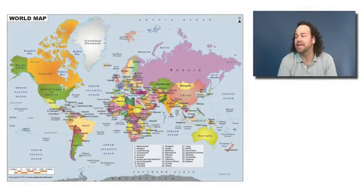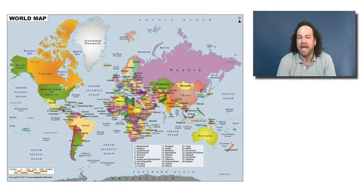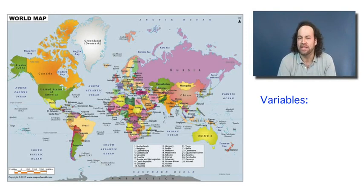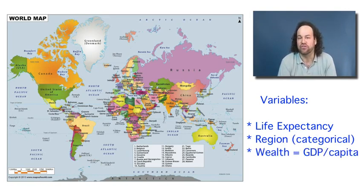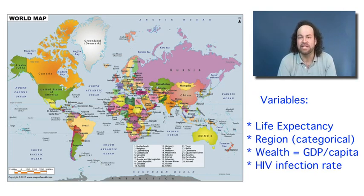To get an example, let's go back again to our map of the world and to different facts and figures about the different countries and territories of the world. We've already considered the life expectancy in the different countries and which region these countries and territories are in. Now we're going to consider two more variables: one is the average wealth of the country, or the GDP per capita, measured in constant 2,000 US dollars for comparison, and later we're going to also consider the HIV infection rate — what percentage of adults in those countries are infected with HIV.